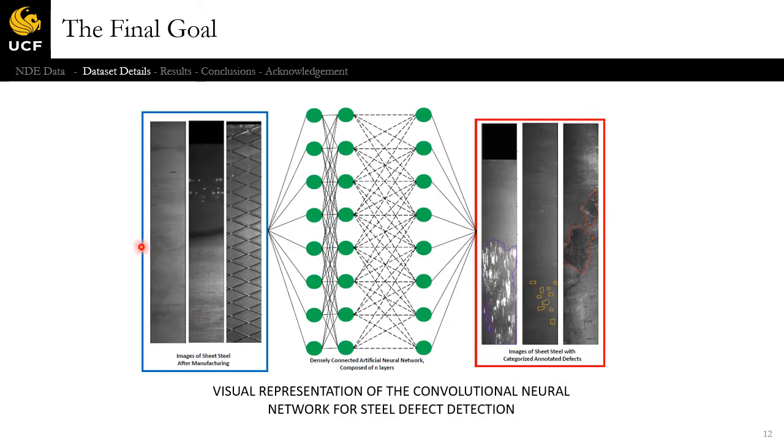On this slide, we see an overall representation of what we would like to accomplish in this work. We want to be able to feed these raw images into our convolutional neural network, and we want the output to be a standard segmentation and classification problem where we segment the defect and then classify it as the specific type of defect.